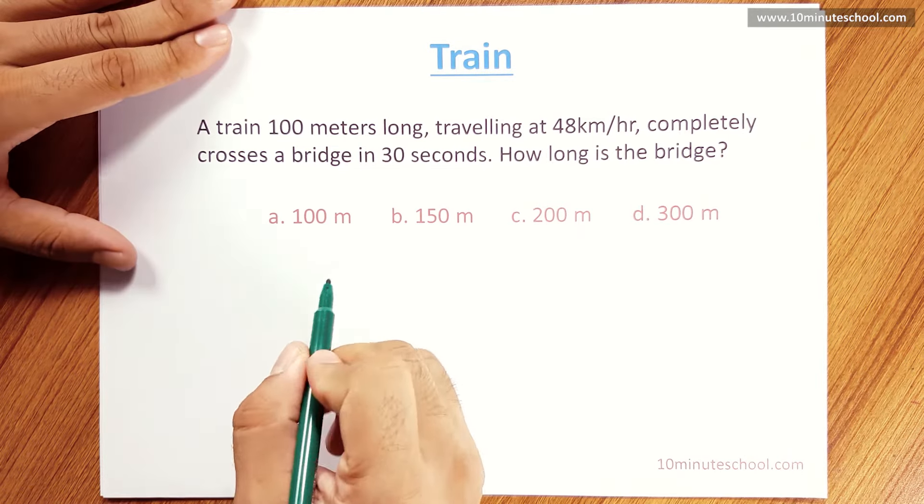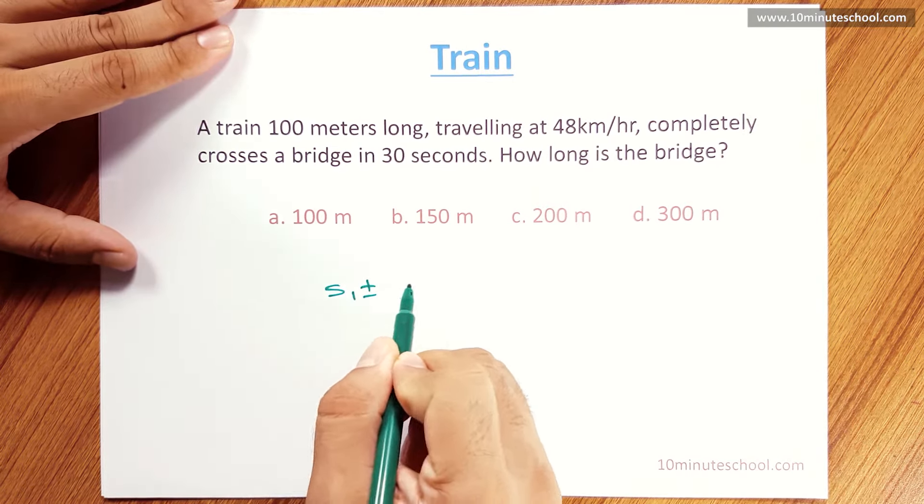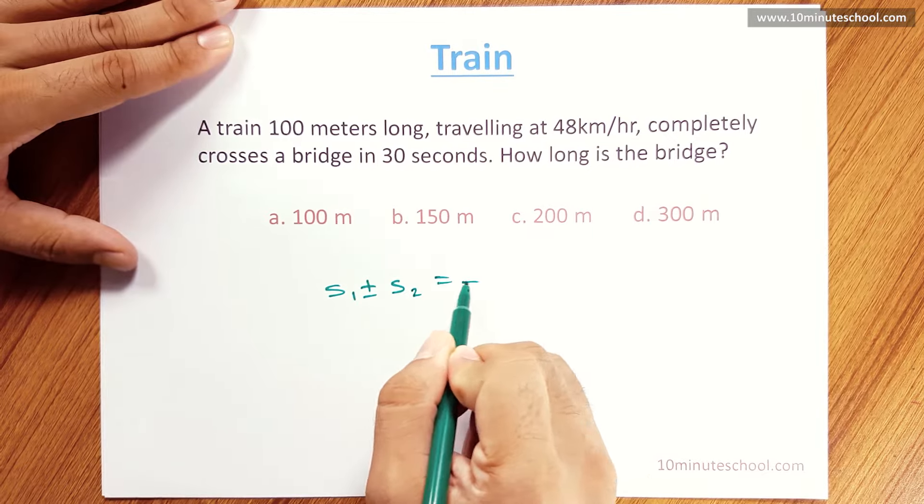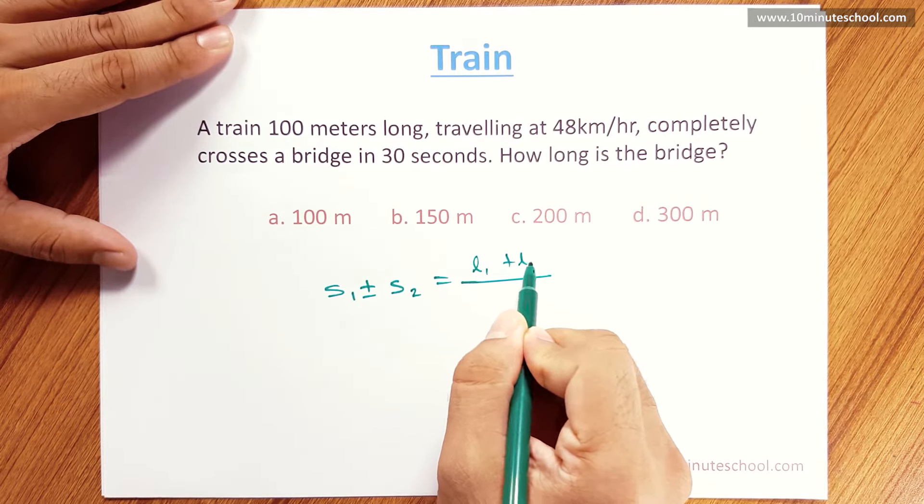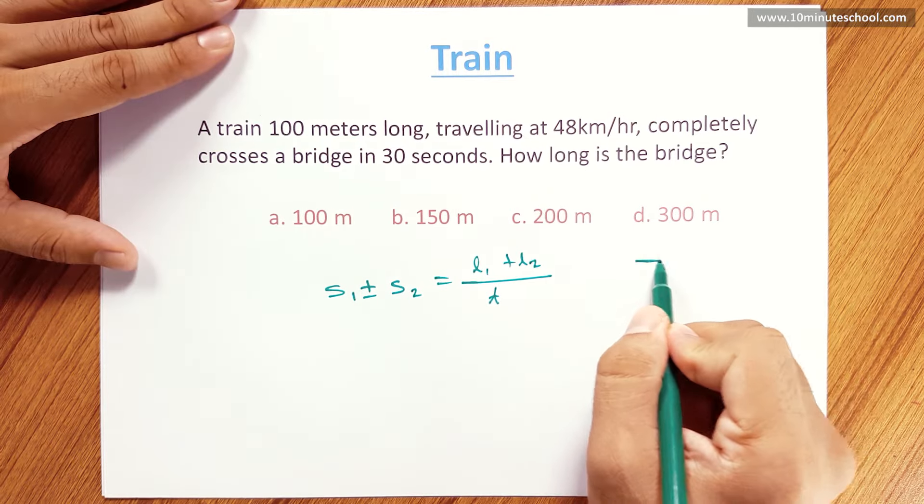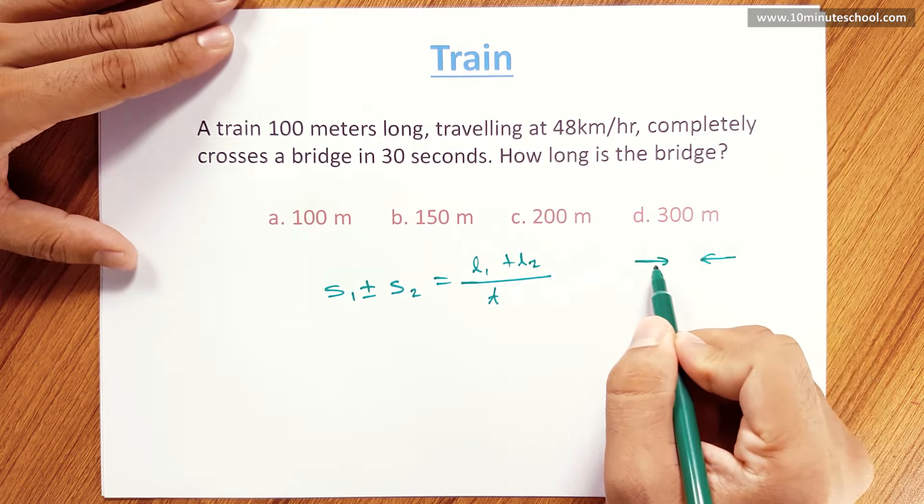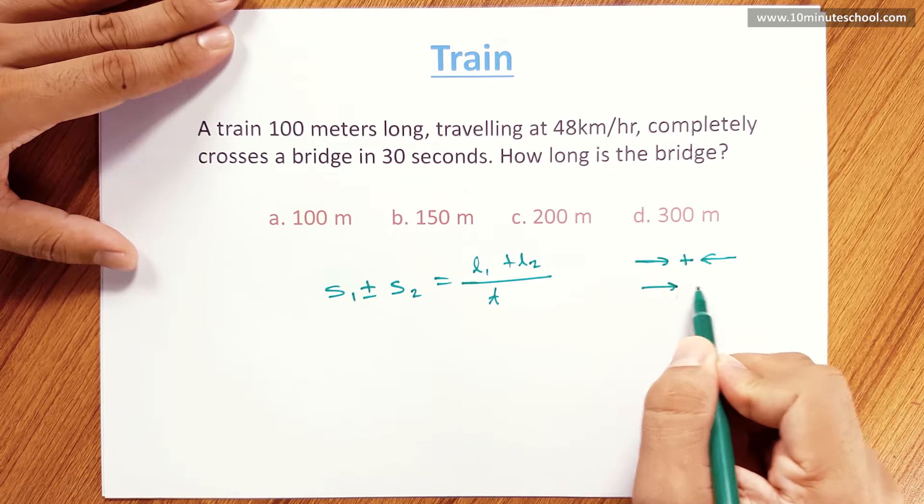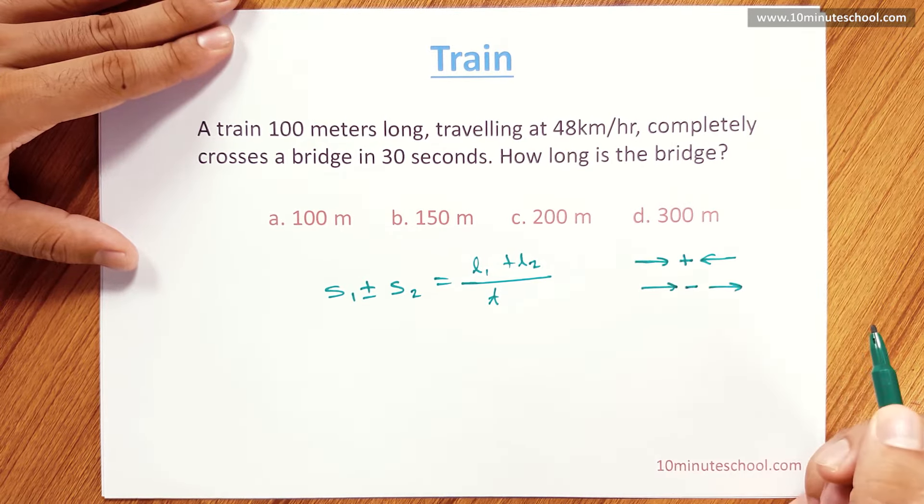We will learn the formula S1 plus or minus S2 equals L1 plus L2 divided by T. The plus or minus depends on the train. The train is more than the B-SOI and the B-SOI is less than the B-SOI.